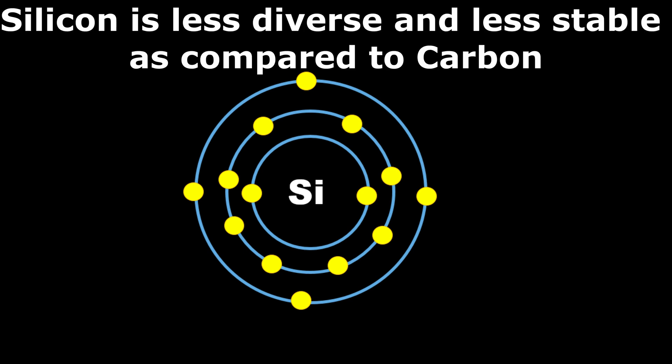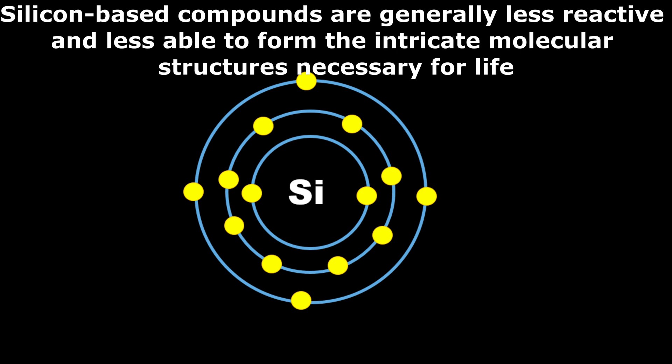Silicon does have the ability to form some complex molecules, but it cannot match the diversity and stability of carbon compounds. Silicon-based compounds are generally less reactive and less able to form the intricate molecular structures necessary for life.